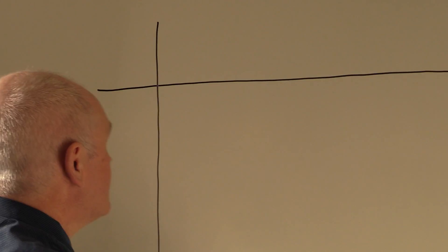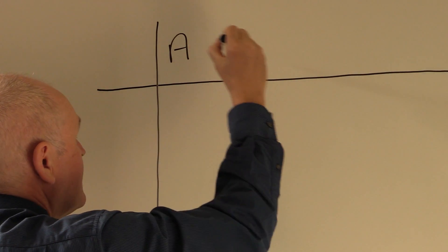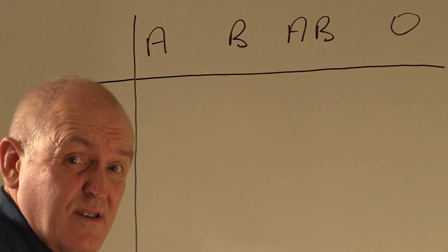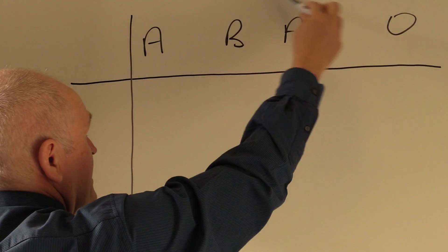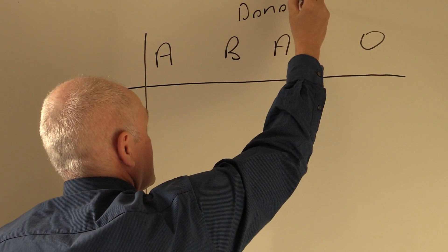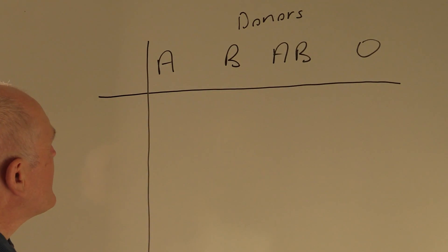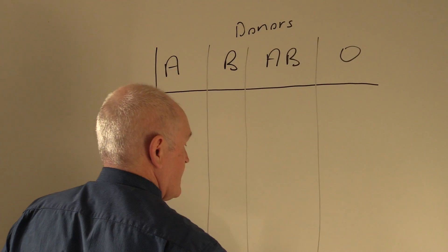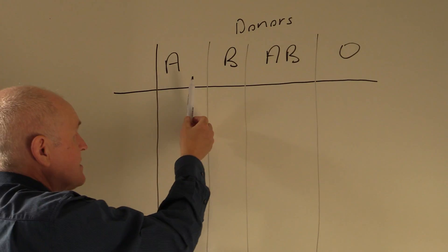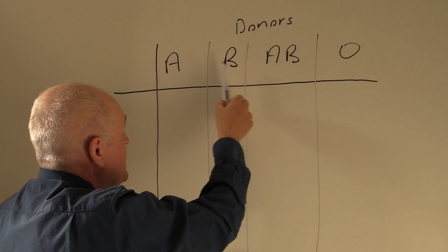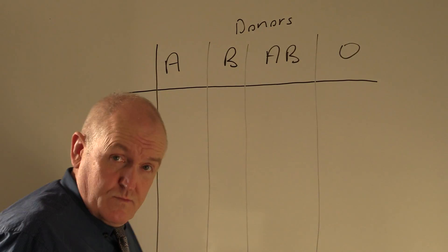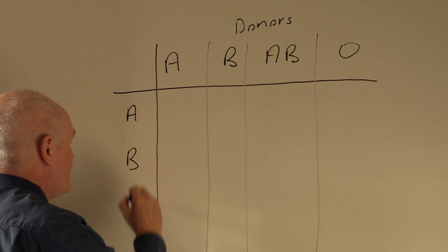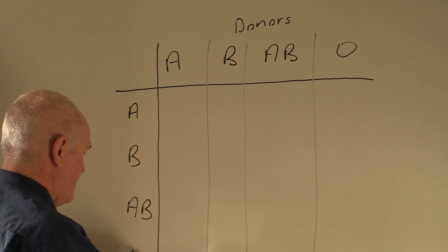What I'm doing here is I'm considering groups A, B, AB, and O. These are donors who are giving their blood, and we need to develop a chart so people can be giving blood when their blood group is A, B, AB, or O. Just thinking about the ABO system, the recipients are also going to be A, B, AB, or O.